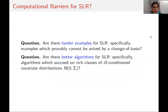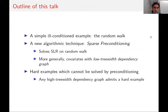This motivates two questions. On one hand, we'd like to know if there are harder examples for sparse regression that could either motivate computational hardness or lead to better algorithms—specifically examples which probably cannot be solved by a change of basis. The other question is: are there better algorithms for sparse regression, specifically algorithms which can succeed on rich classes of ill-conditioned covariate distributions where the known algorithms don't? In this talk, we'll provide some partial answers.